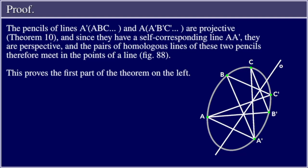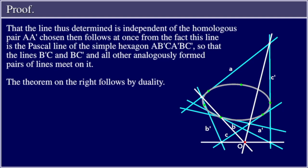This proves the first part of the theorem on the left. That the line thus determined is independent of the homologous pair a, a' chosen then follows at once from the fact that this line is the Pascal line of the simple hexagon a b' c a' b c', so that the lines b'c and bc', and all other analogously formed pairs of lines, meet on it. The theorem on the right follows by duality.